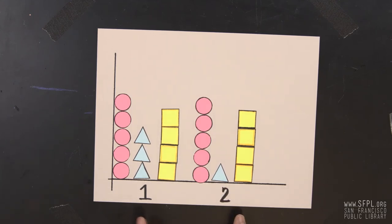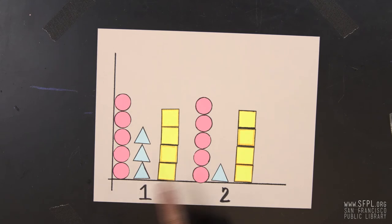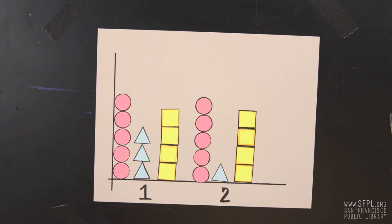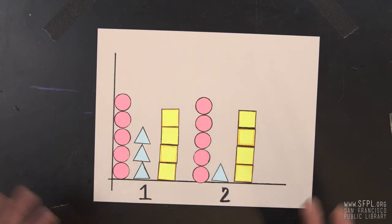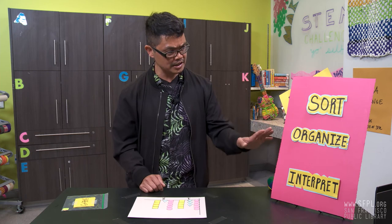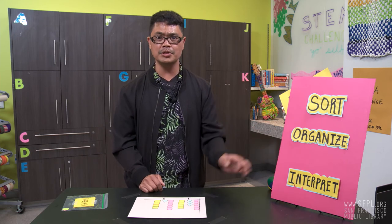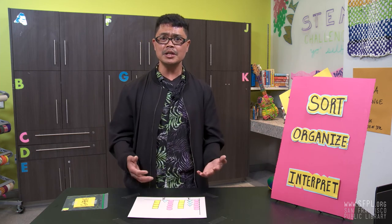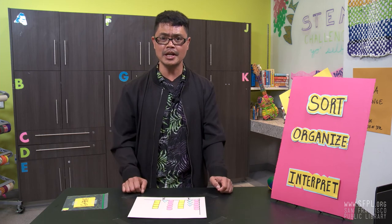Now since we have two sets of data, we can actually compare this data to this data right here. Can you see the pattern? What's happening? Let's take a look at the triangle. Compare it to this one — we lost two triangle shapes. So by playing with data and organizing it, sorting it, and making some interpretation, we can actually come up with some interesting information that can help us decide.